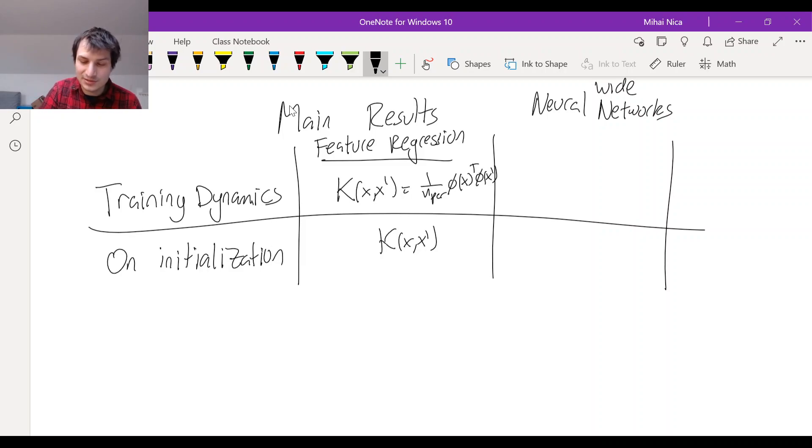So the training dynamics is some kernel called the neural tangent kernel. So let's delete this. So some kernel theta, which is called the neural tangent kernel.